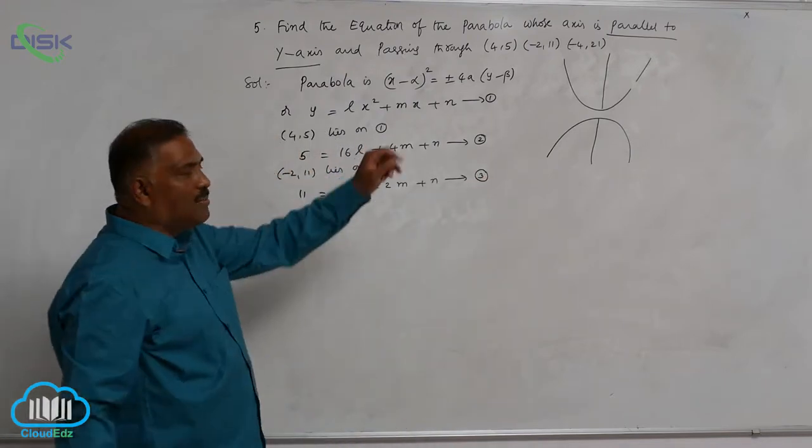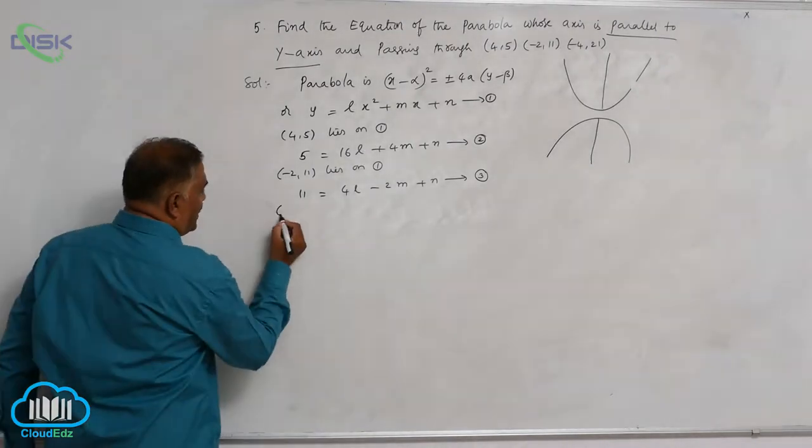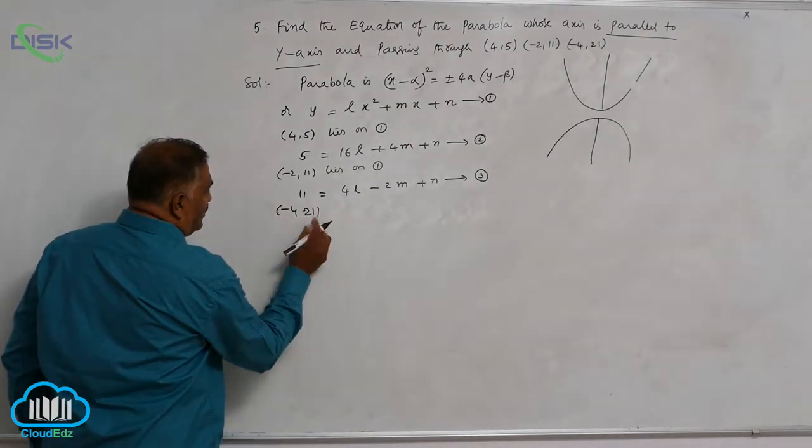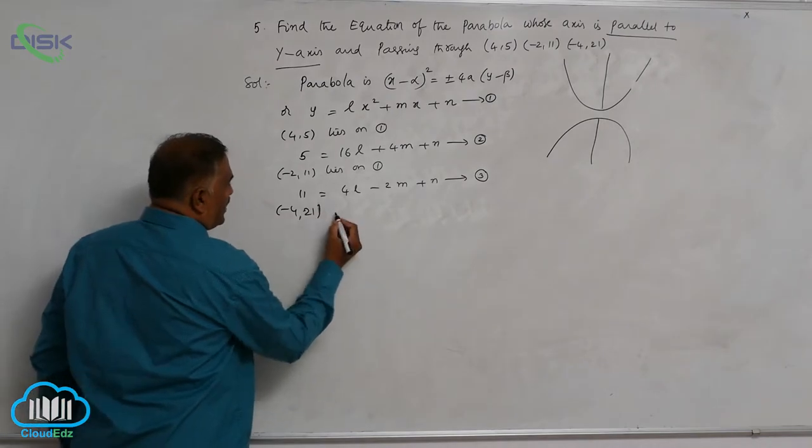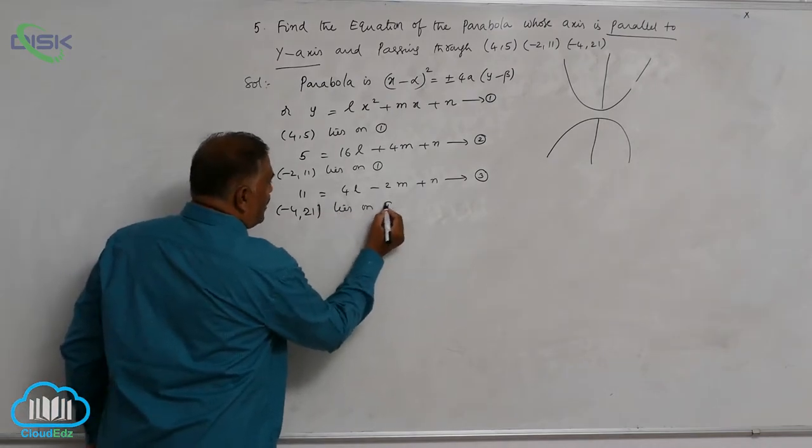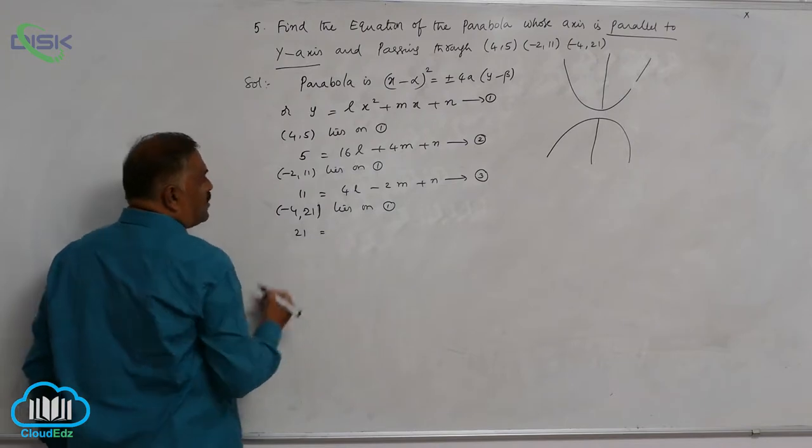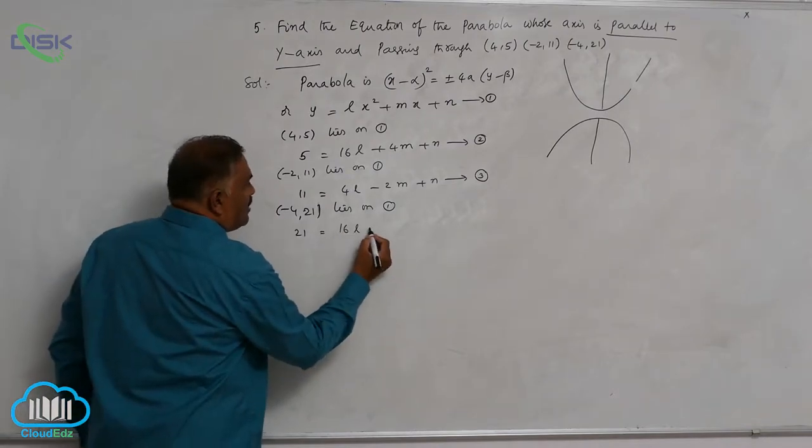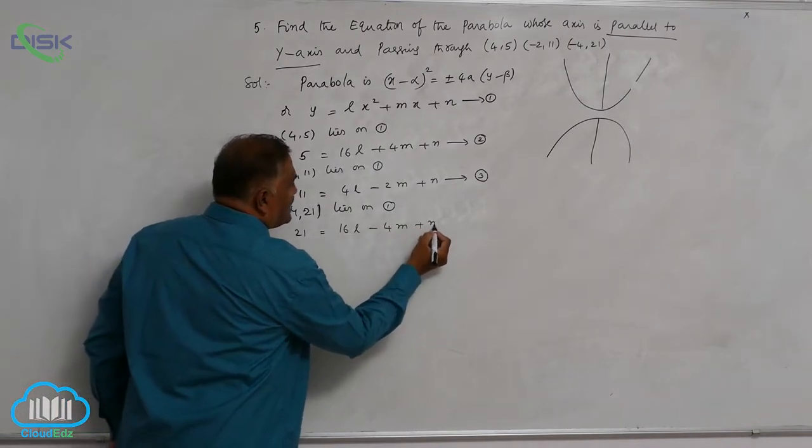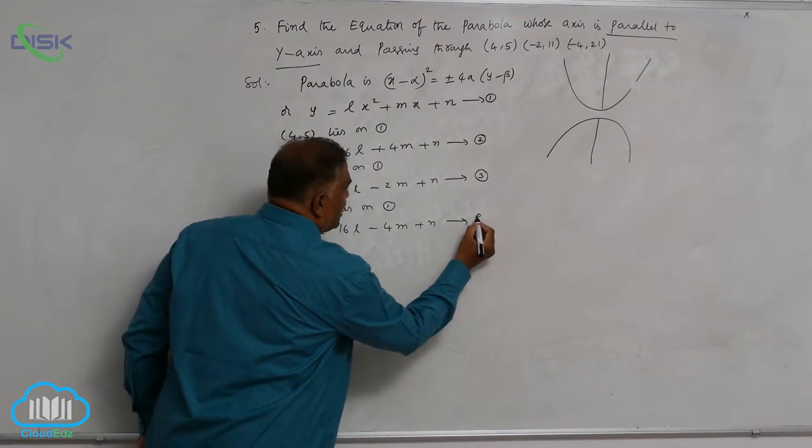The third point is (-4, 21) lies on 1. 21 is equal to 16l minus 4m plus n, this is equation number 4.